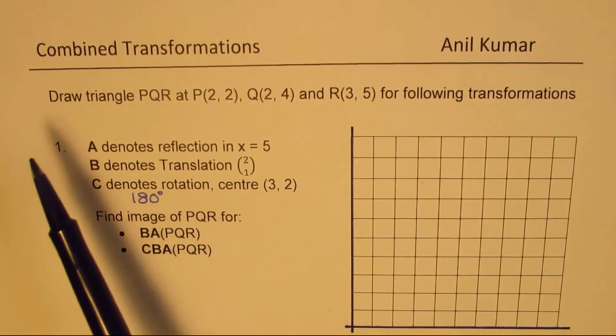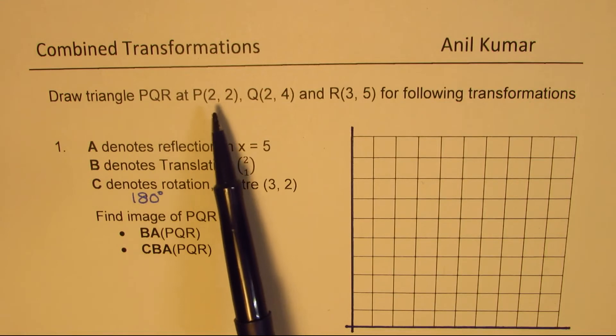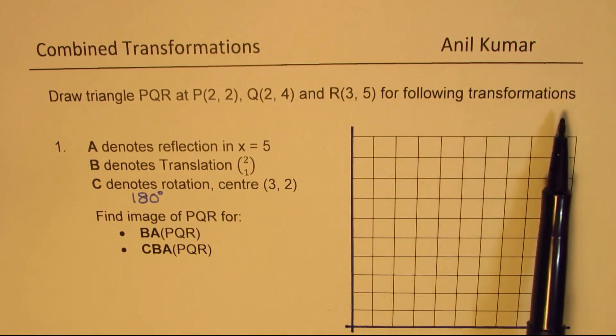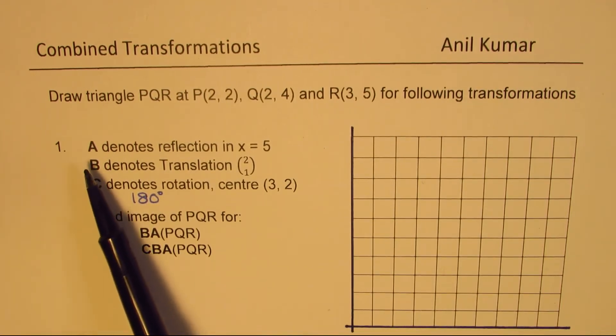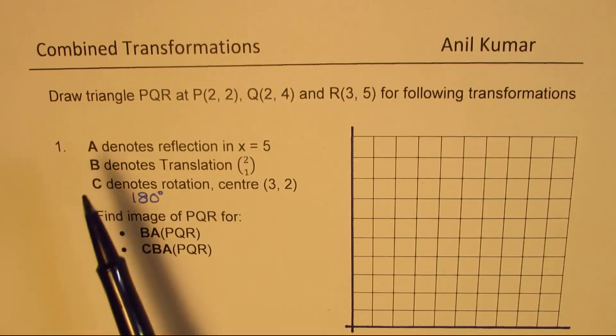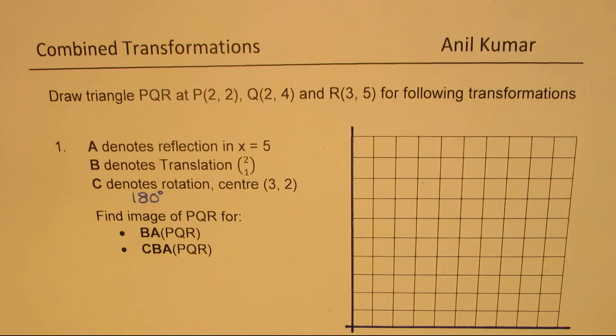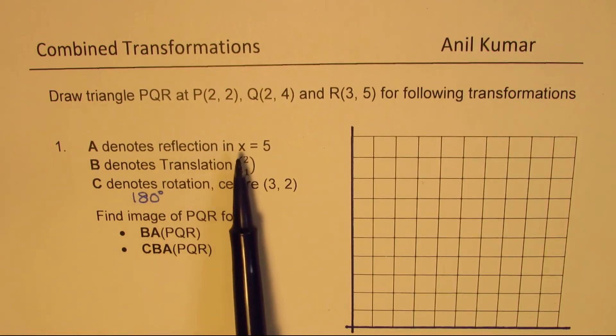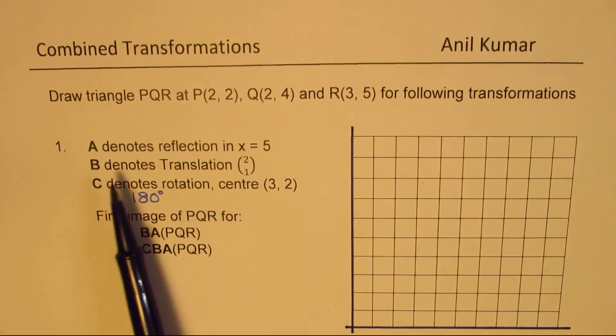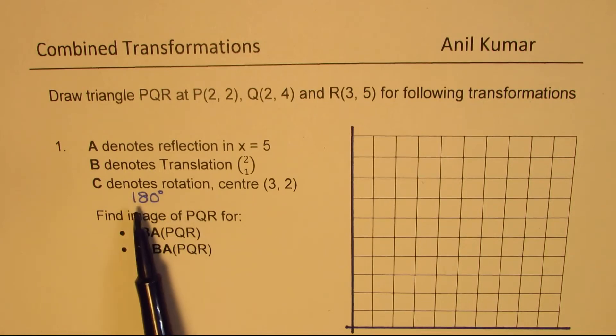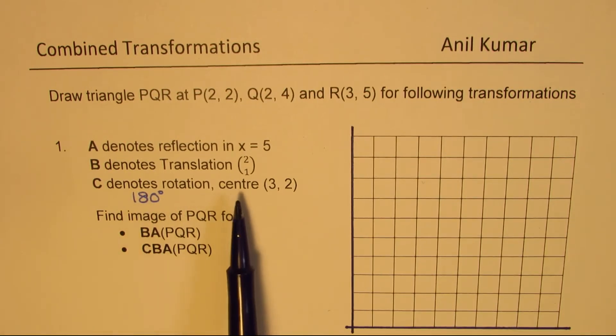The question is: draw triangle PQR at P(2,2), Q(2,4), and R(3,5) for the following transformations. A denotes reflection in x equals 5. B denotes translation (2,1), that means 2 units to the right, 1 unit up. C denotes rotation of 180 degrees with center at (3,2).